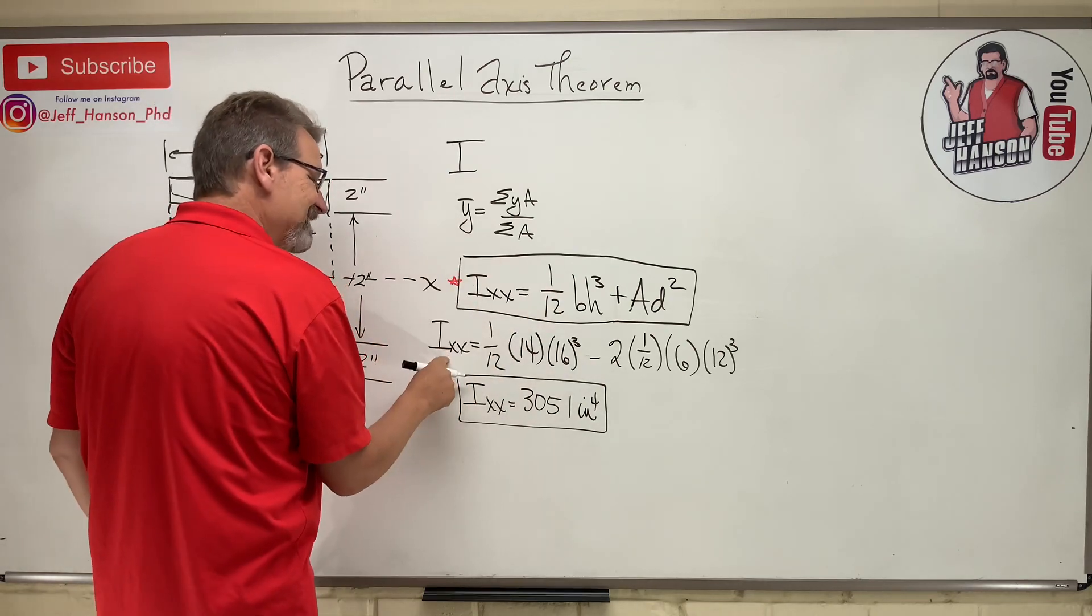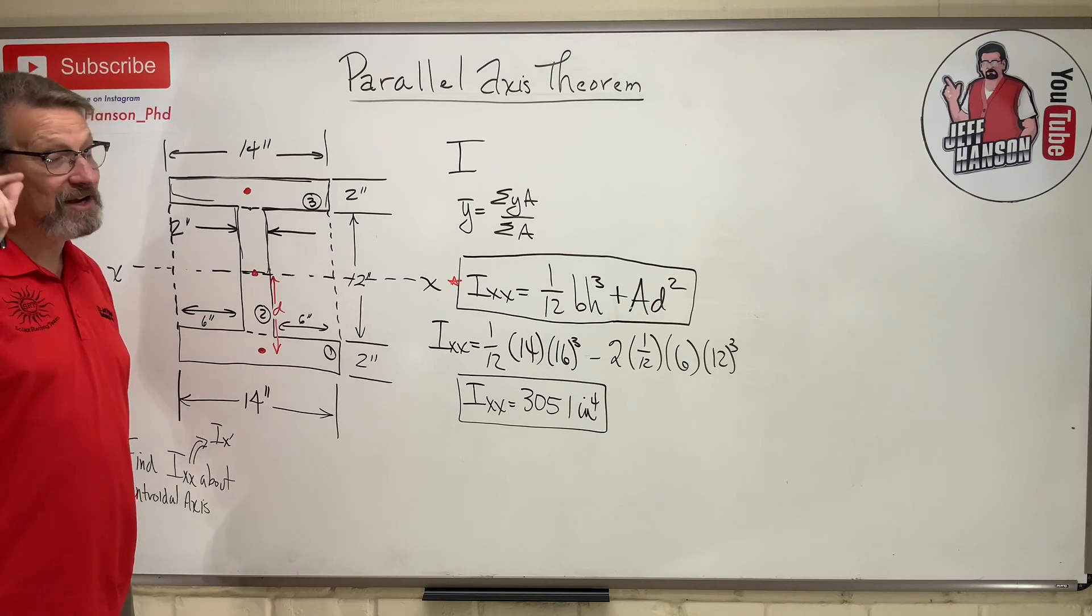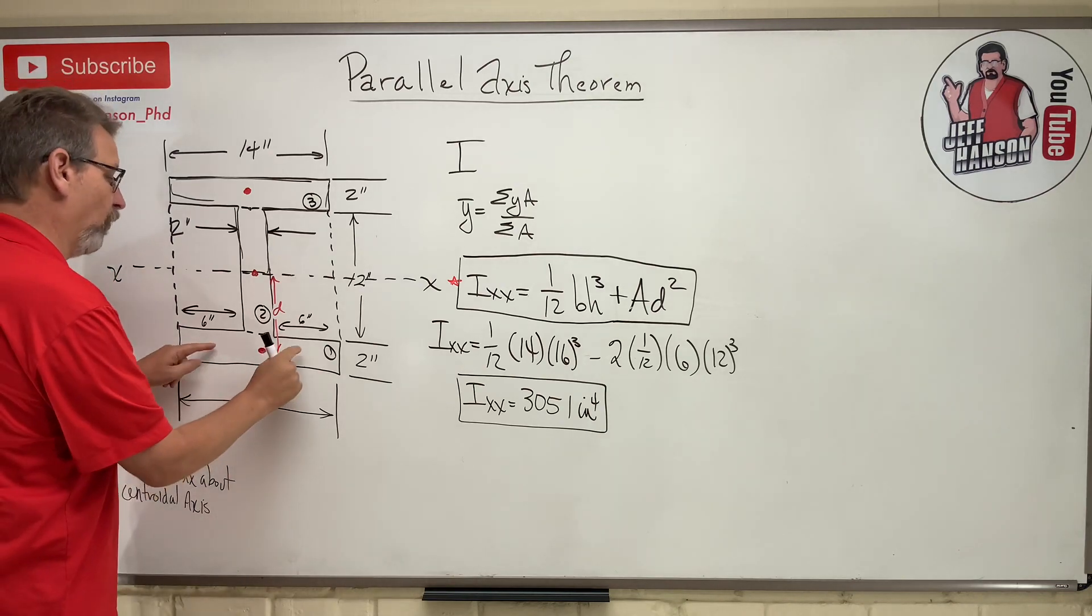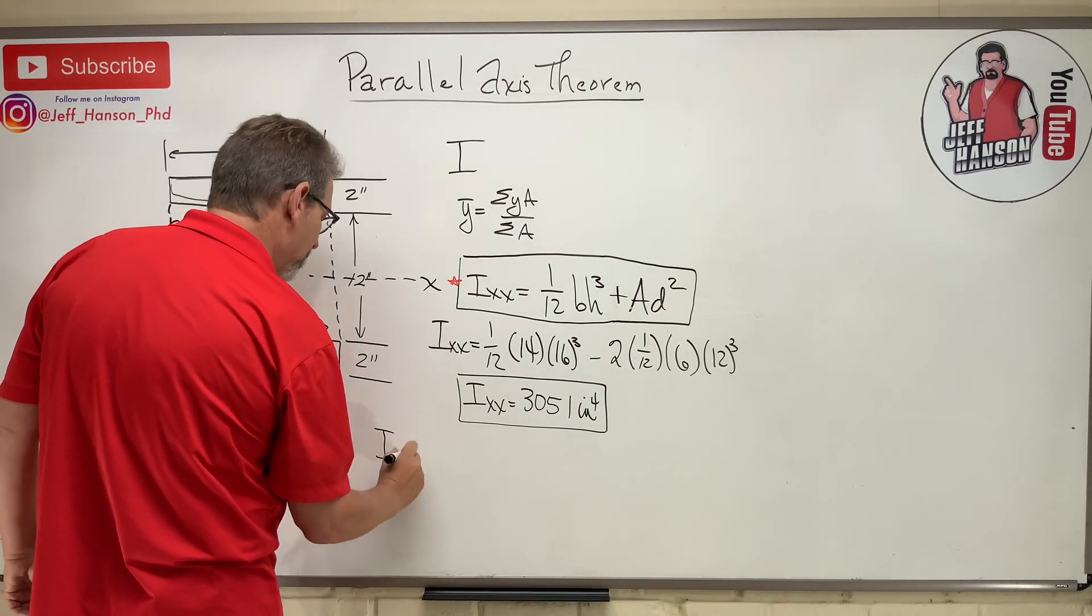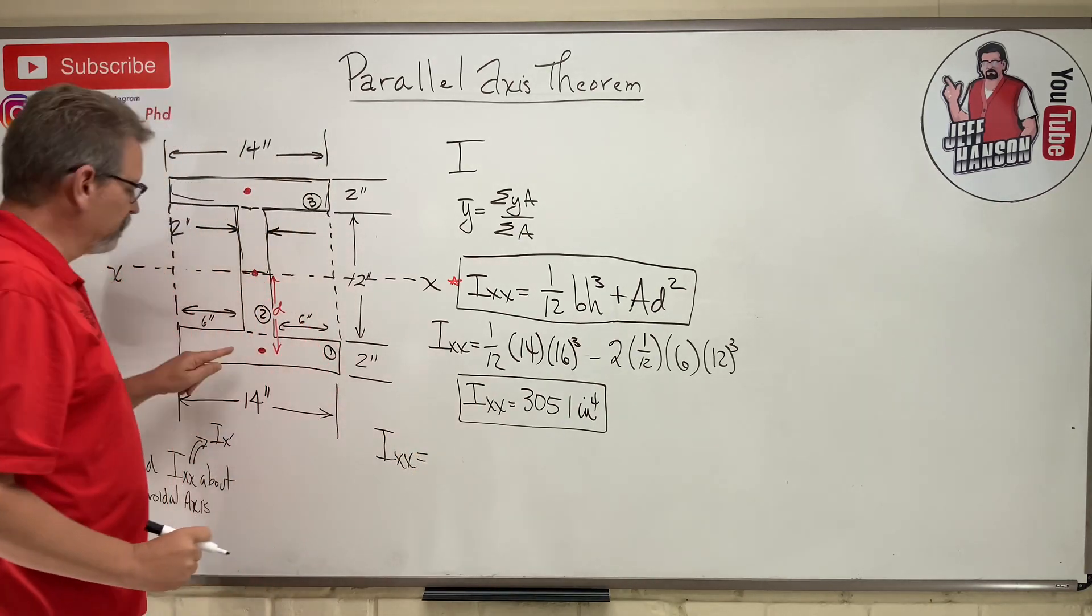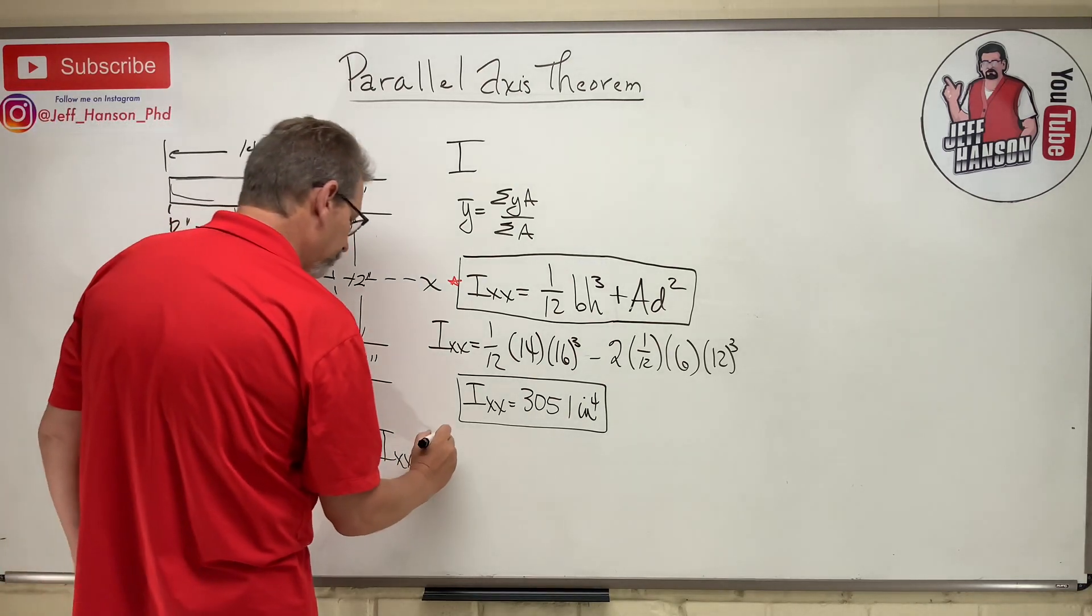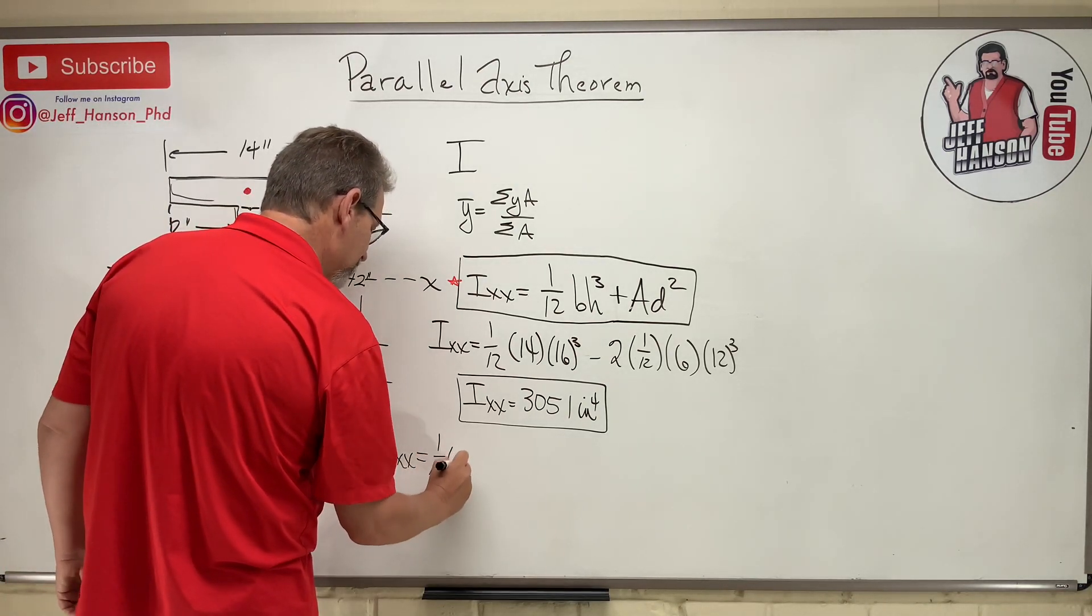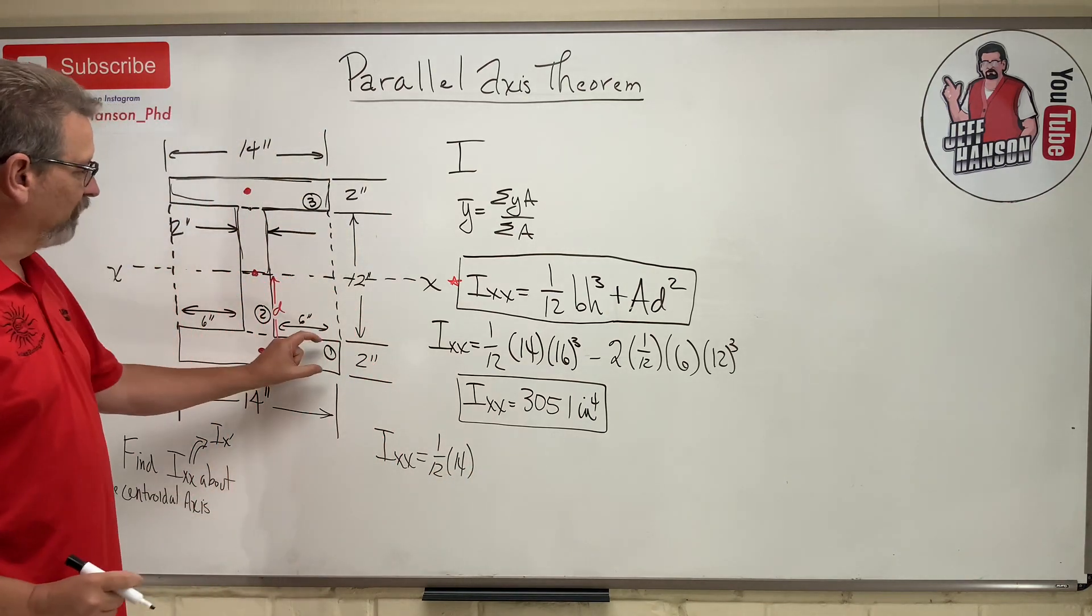So I'm going to work this exact same problem, but using those three shapes that we initially thought we should use, which is shape one, two, three. So we go like this. I_xx is equal to, let's do shape one. What's the base? Fourteen. One twelfth, the base, times the height cubed, which is two.